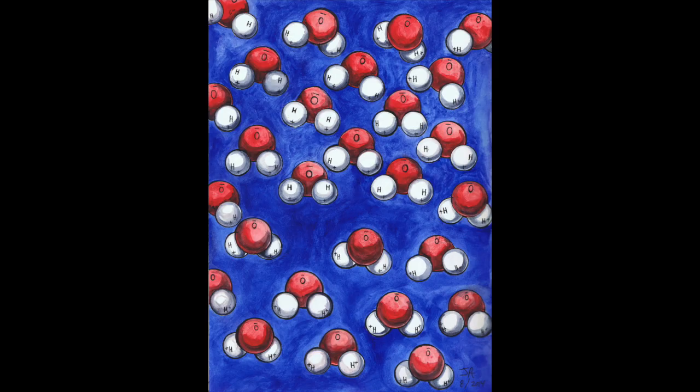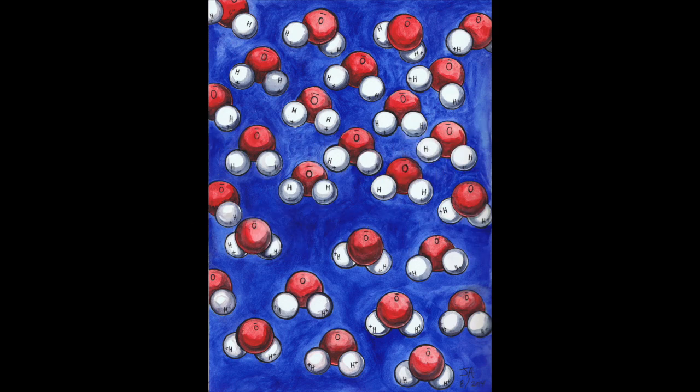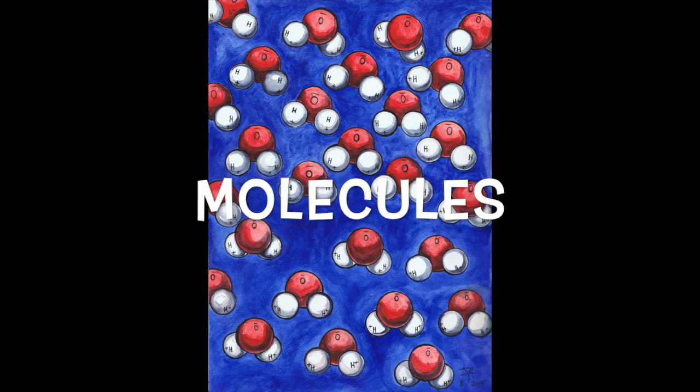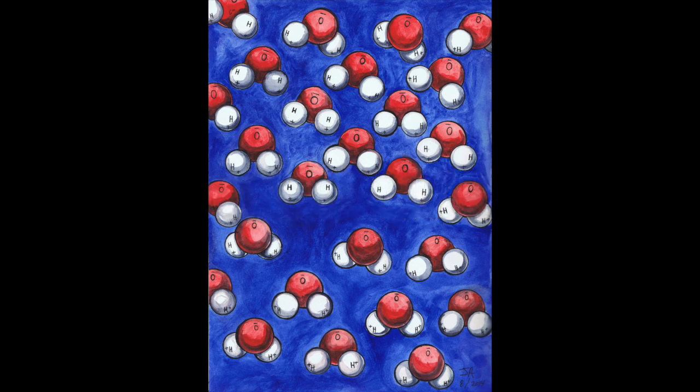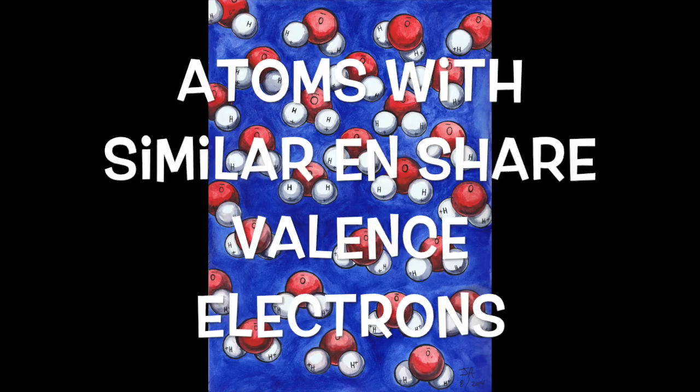There is another kind of compound called a covalent compound, or molecule. Molecules form when two atoms on the right side of the periodic table, usually nonmetals with relatively similar electronegativities, share electrons to become stable.